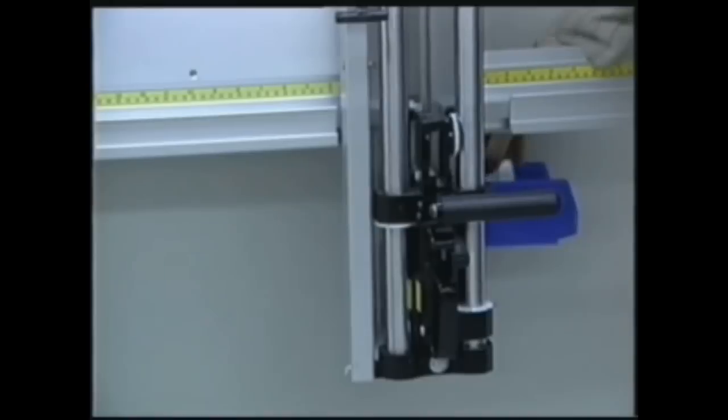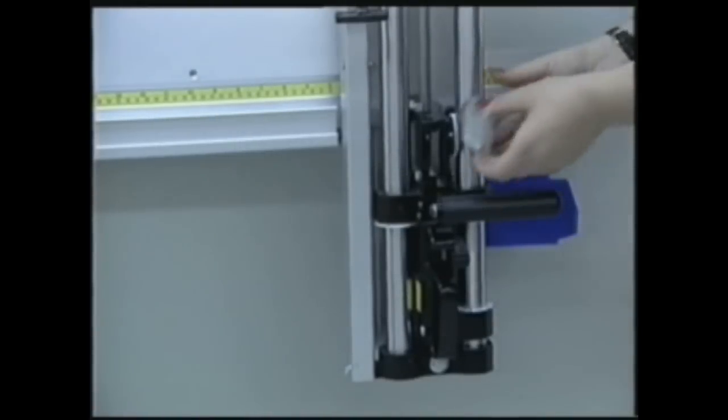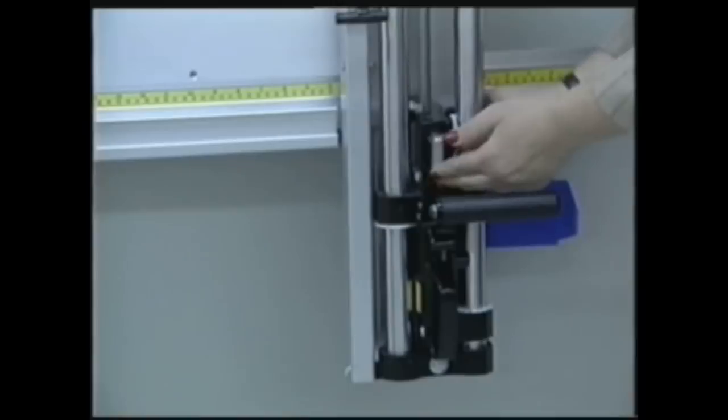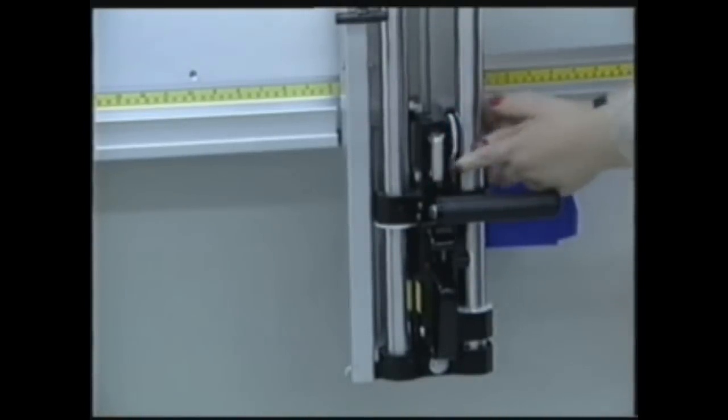Loosen the speed screw and slide the mat cutting pillar post out of the head and slide the glass cutting pillar post in its place. Tighten the speed screw to lock the pillar post.